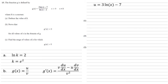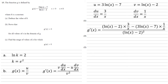u is our numerator, 3 ln x − 7. Differentiating this — since ln x differentiates to 1/x — gives 3/x, and the 7 disappears. v is our denominator, ln x − 2, which differentiates to 1/x, the 2 disappears. Putting these into the formula: g'(x) = [(ln x − 2)(3/x) − (3 ln x − 7)(1/x)] / (ln x − 2)².